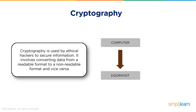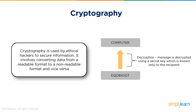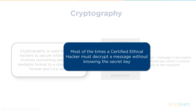For example, the word 'computer' once encrypted would look like 'eqorxvgt' — meaningless to a normal user, but the person with the key can convert it back to 'computer.' This is a substitution cipher where the key is alphabet plus three: C becomes E, O becomes Q, M becomes O, and so on. The encrypted message is known as a cipher. Decryption is just the reverse — knowing the key, you go back three characters in the alphabet to find the original letter. Most of the time, a certified ethical hacker must decrypt a message without knowing the secret key.